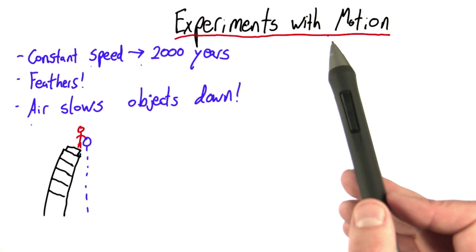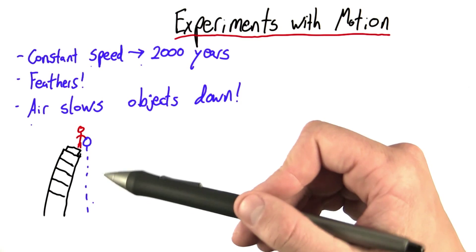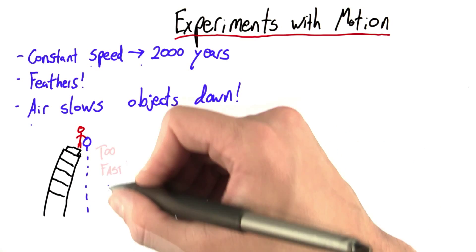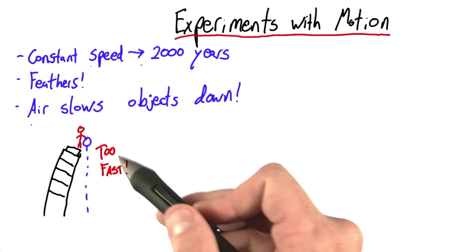Now, the rumor is that Galileo's experiments involved him dropping objects off of the leaning tower of Pisa. It's quite possible that he did this, but it seems unlikely that he would have gotten good results since, as we talked about before, free fall motion is just too fast.